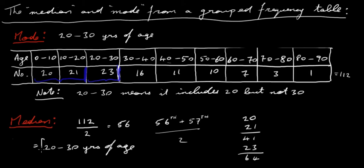This is the group we're talking about. Again, there is a way of estimating the actual median age, but I won't do that in this video. So the 56th and 57th person are somewhere between 20 and 30 years of age. So that's really it for median and mode for a grouped frequency table.